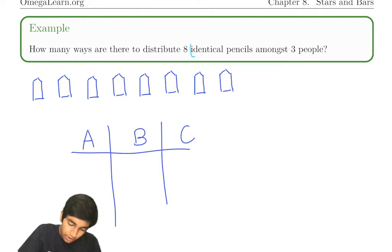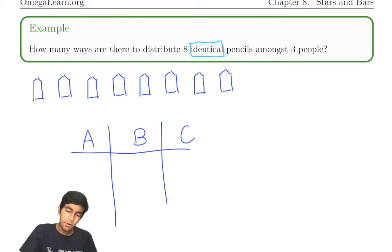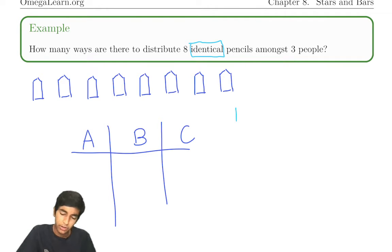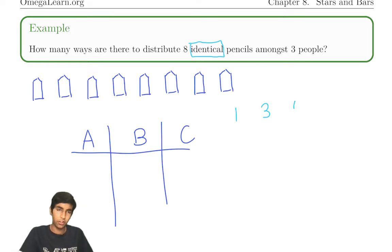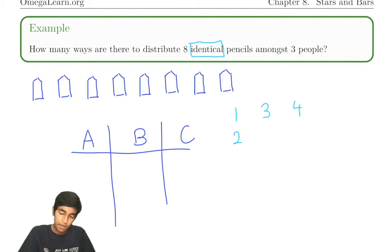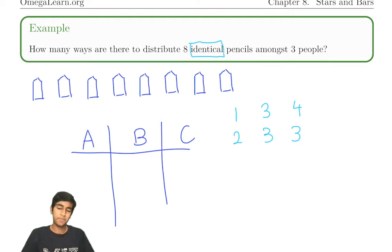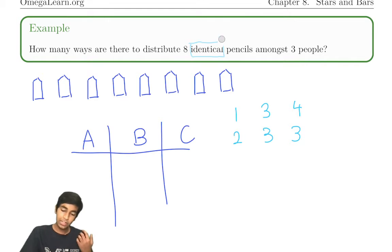We could try doing casework: person A gets one pencil, person B gets three pencils, person C gets four pencils; or person A gets two pencils, three pencils, three pencils. But that's going to take a long time, so let's try to find something simpler.